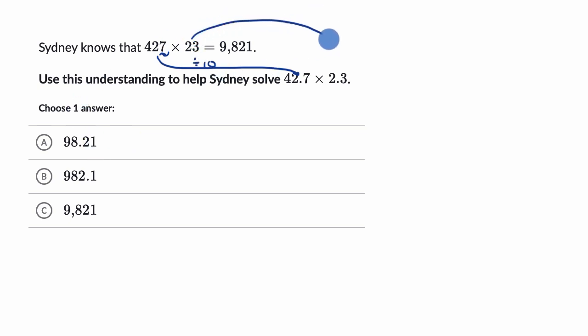And similarly, to get from 23 to 2.3, you are dividing by 10. So you're taking the product of two things. Each of them is 1/10th of each of the things in that original product. So let's just keep that in mind for a second.